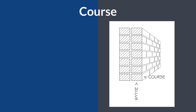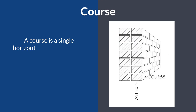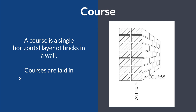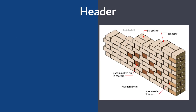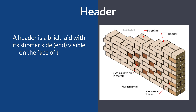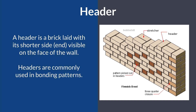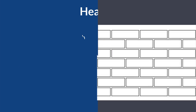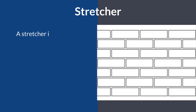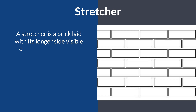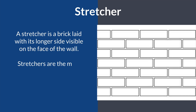3. Course. A course is a single horizontal layer of bricks in a wall. Courses are laid in succession to form the structure. 4. Header. A header is a brick laid with its shorter end visible on the face of the wall. Headers are commonly used in bonding patterns. 5. Stretcher. A stretcher is a brick laid with its longer side visible on the face of the wall. Stretchers are the most common orientation in modern construction.